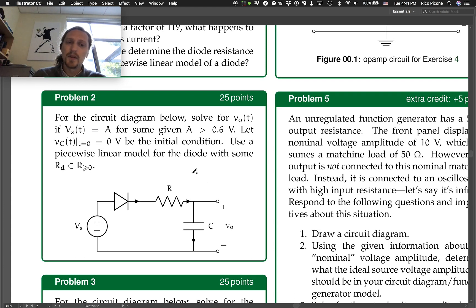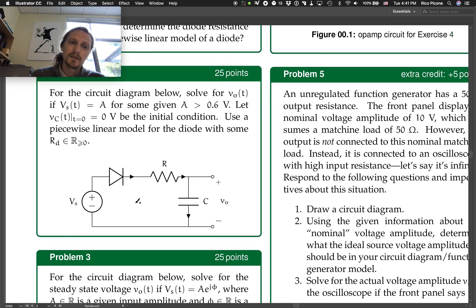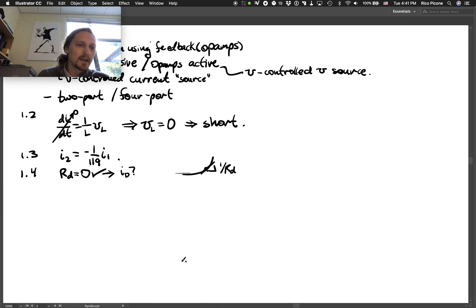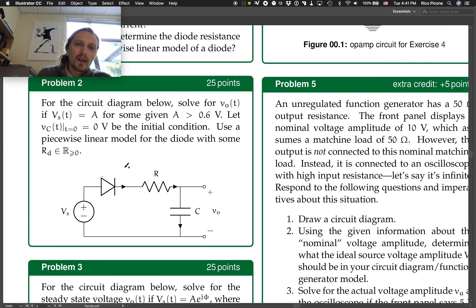And use a piecewise linear model for the diode with some RD. So let's do two. Since A is greater than 0.6 volts, we can effectively just assume that this diode is going to be on. So you could go through and say okay, VD, like we usually do, but I tried to give you a strong signal here that this is always going to be on.